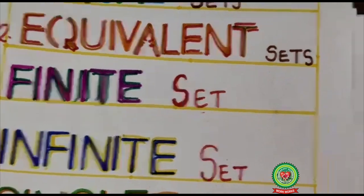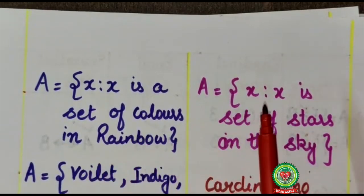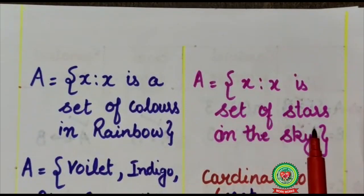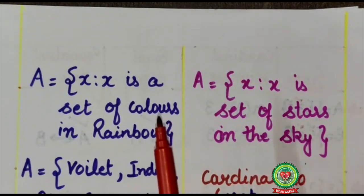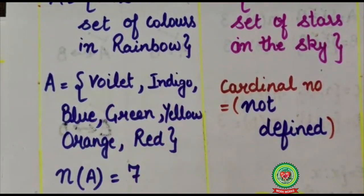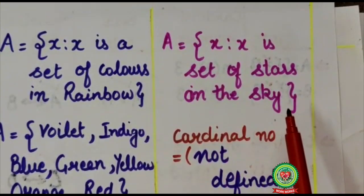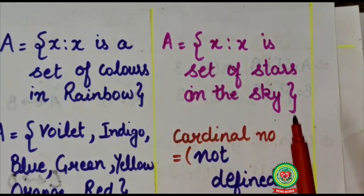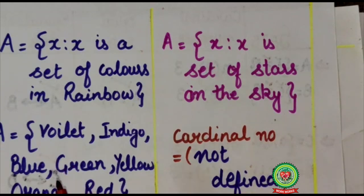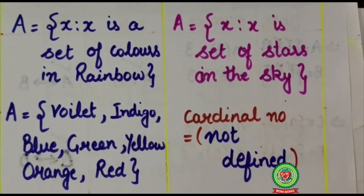But before that, have a look at the following sets. Here, x such that x is a set of colors in rainbow. And on the other hand, x such that x is a set of stars in the sky. Now set of colors in rainbow are violet, indigo, blue, green, yellow, orange, red and its cardinal number is 7. Here it indicates there are limited elements and having fixed cardinal number. On the other hand, we are having a set which we cannot list or count. So here cardinal number is also not defined. Therefore, this is a countable set and this is a not countable set. This is our today topic, that is finite set and infinite set.